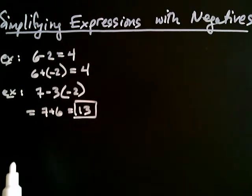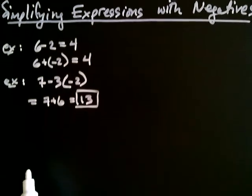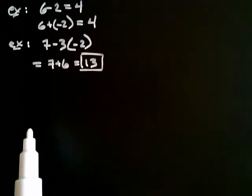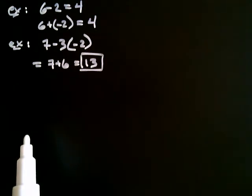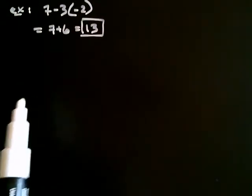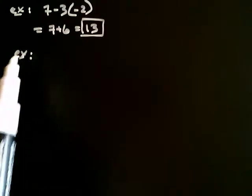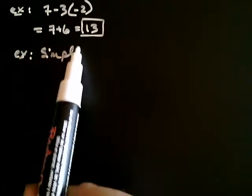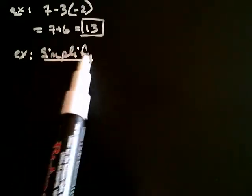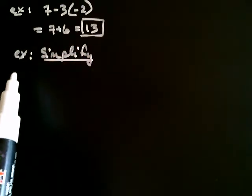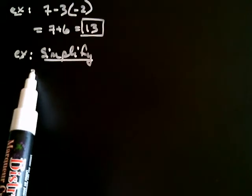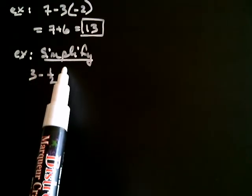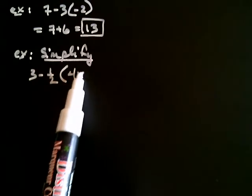In this video, we're going to make use of both of those techniques again, but now including variables. Let's simplify something kind of complicated, like 3 minus 1 half multiplied by 4x minus 6.